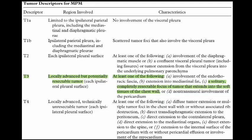Regarding T-staging, this case is classified as T3 — locally advanced but potentially resectable tumor. At least one of the following must be present: involvement of the endothoracic fascia, extension into mediastinal fat, a solitary completely resectable focus of tumor extending into the soft tissue of the chest wall, or non-transmural involvement of the pericardium. In our case, the solitary resectable focus extending into the chest wall soft tissue qualifies it as T3.